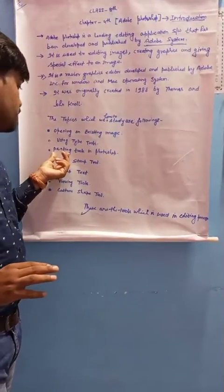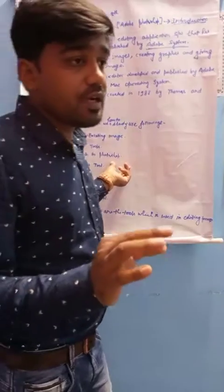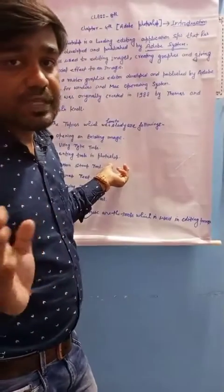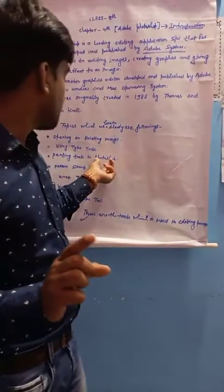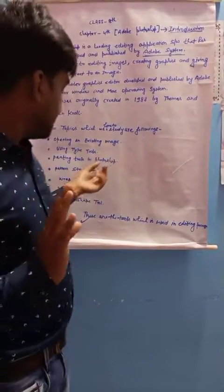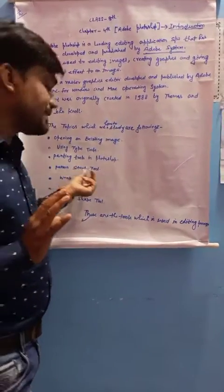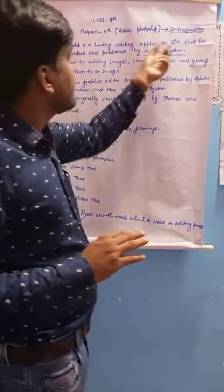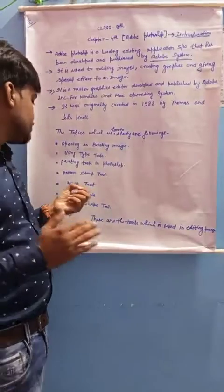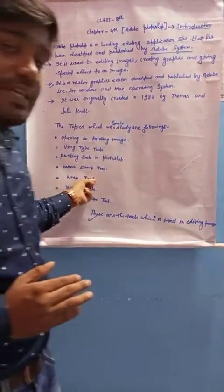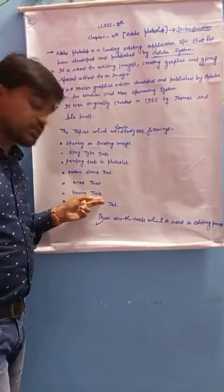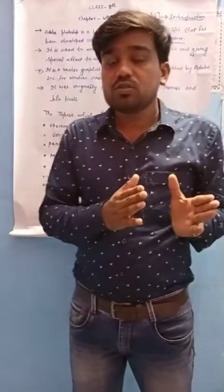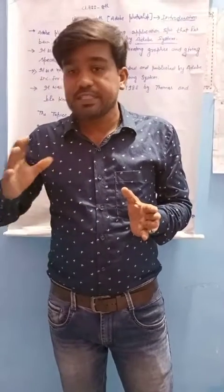The third point is the painting tool in Photoshop, which is also used to create special effects on images. The next points are Eraser Text, Viewing Tools, and Custom Shape Tool. These are some basic tools used nowadays in Photoshop to edit images, create special effects, or create graphics.